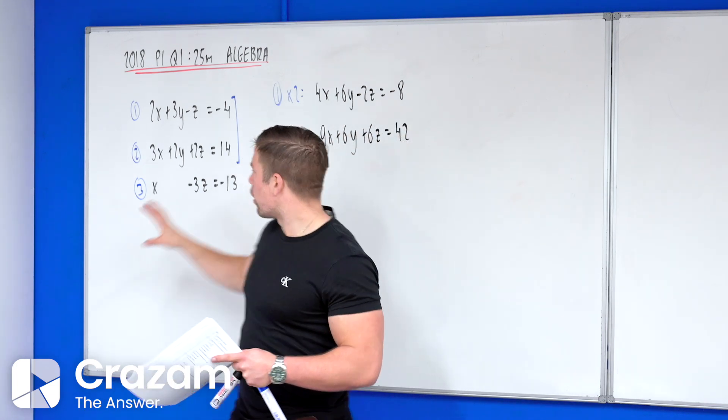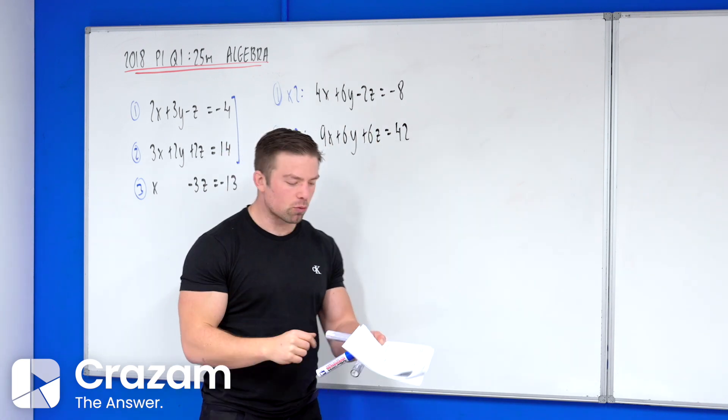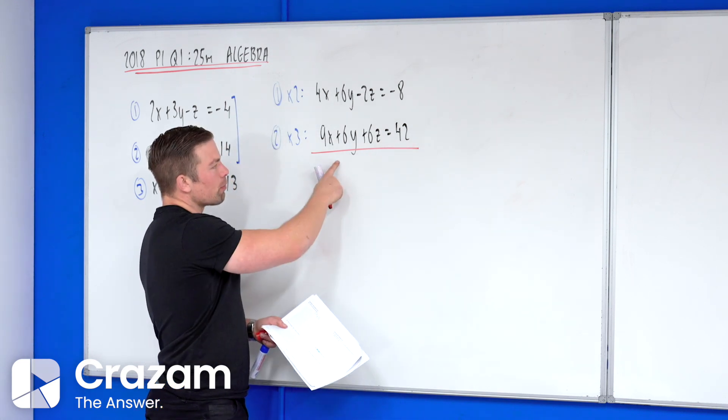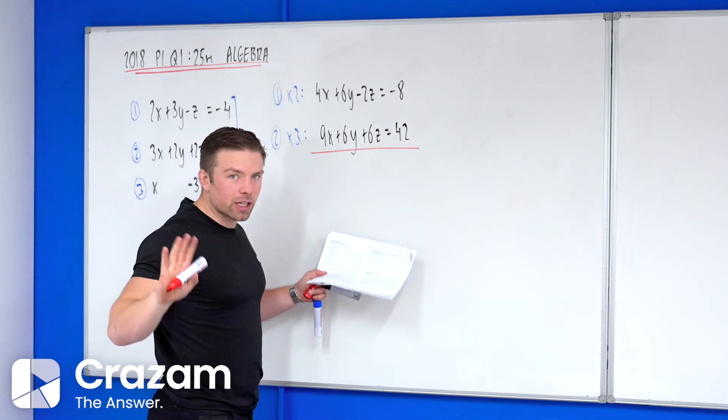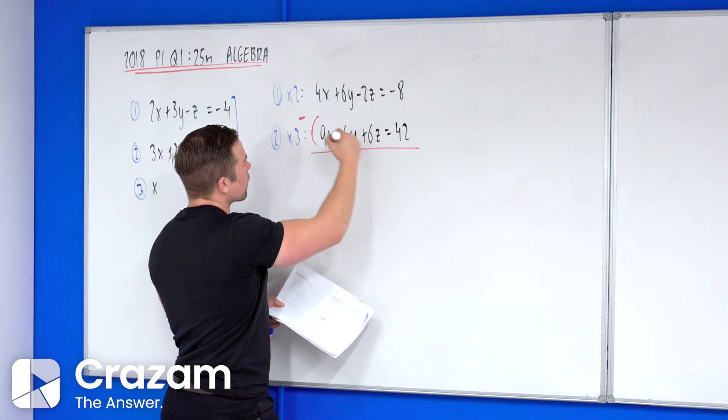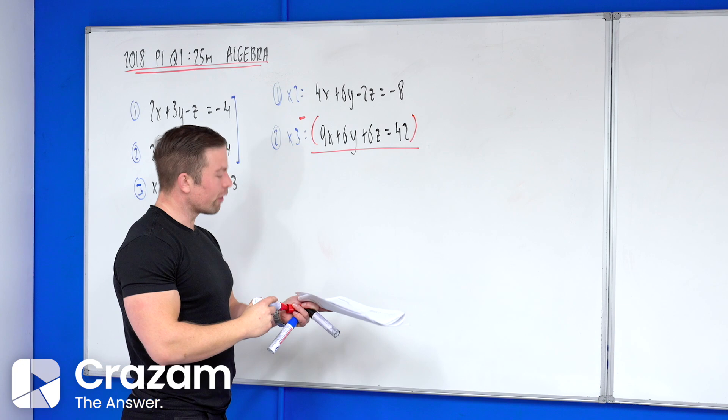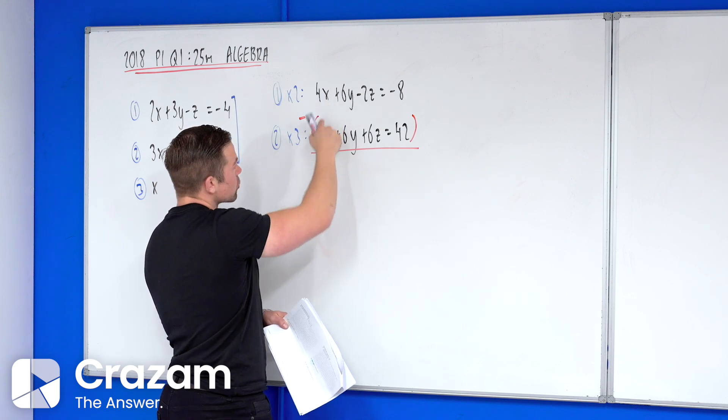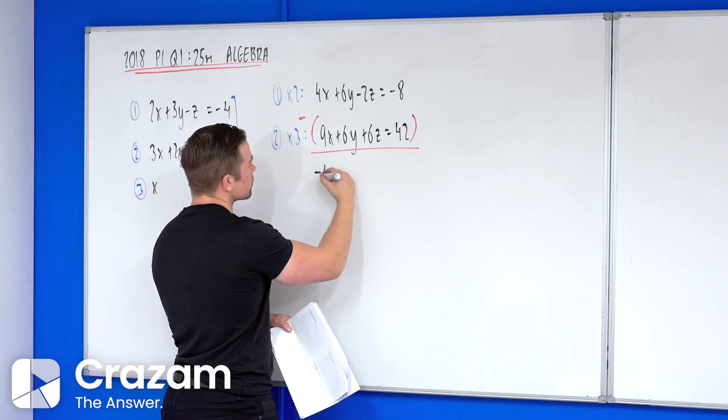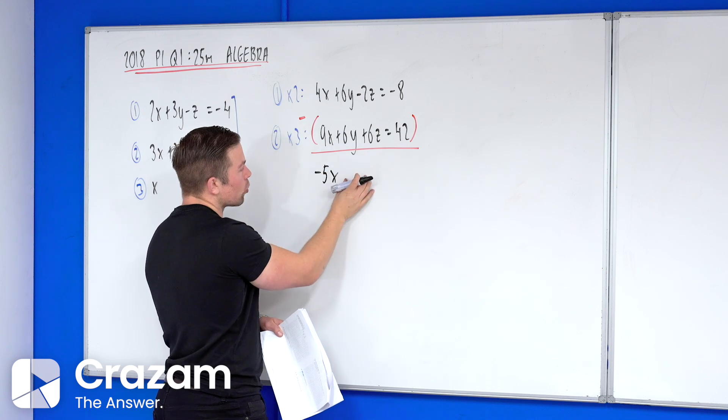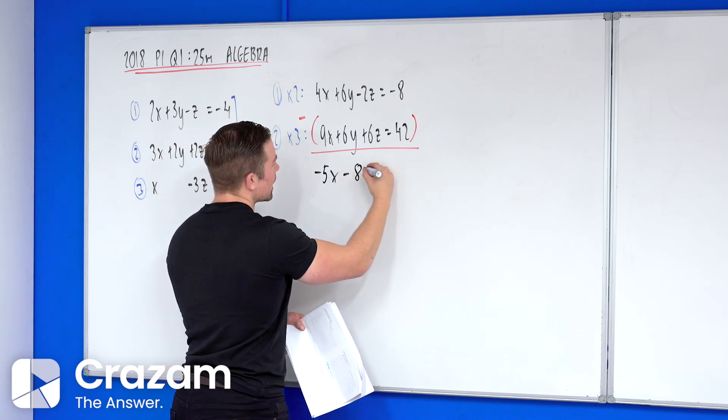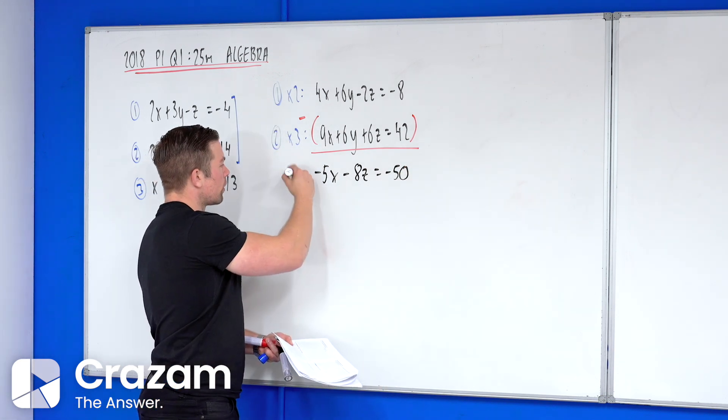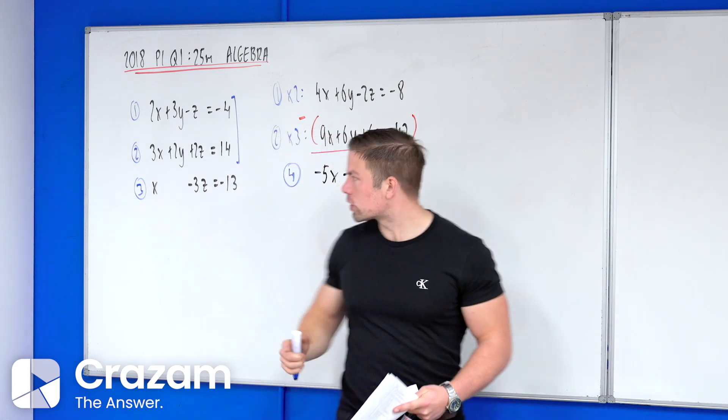Now, everyone would have a slightly different way of looking at this. We need to get rid of the y's. In my case here I have to take the equations away from each other. So if I take the equations away from each other, 4x minus 9x is minus 5x, 6y minus 6y is nothing, we have minus 8z and we have minus 50. That now here is equation number four.